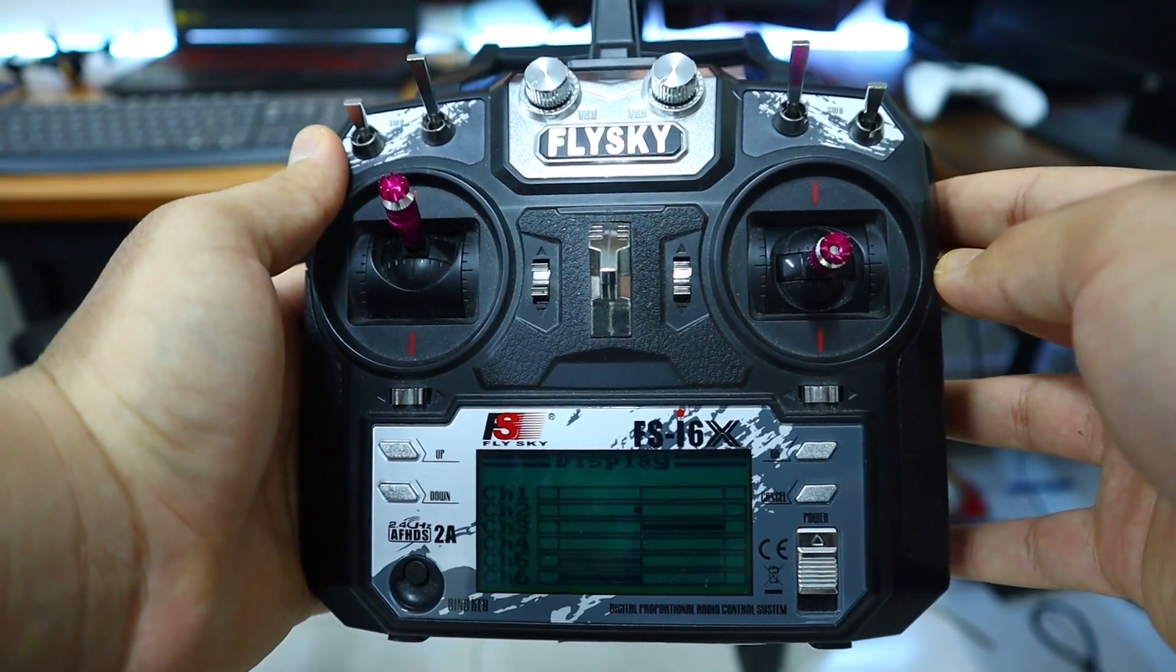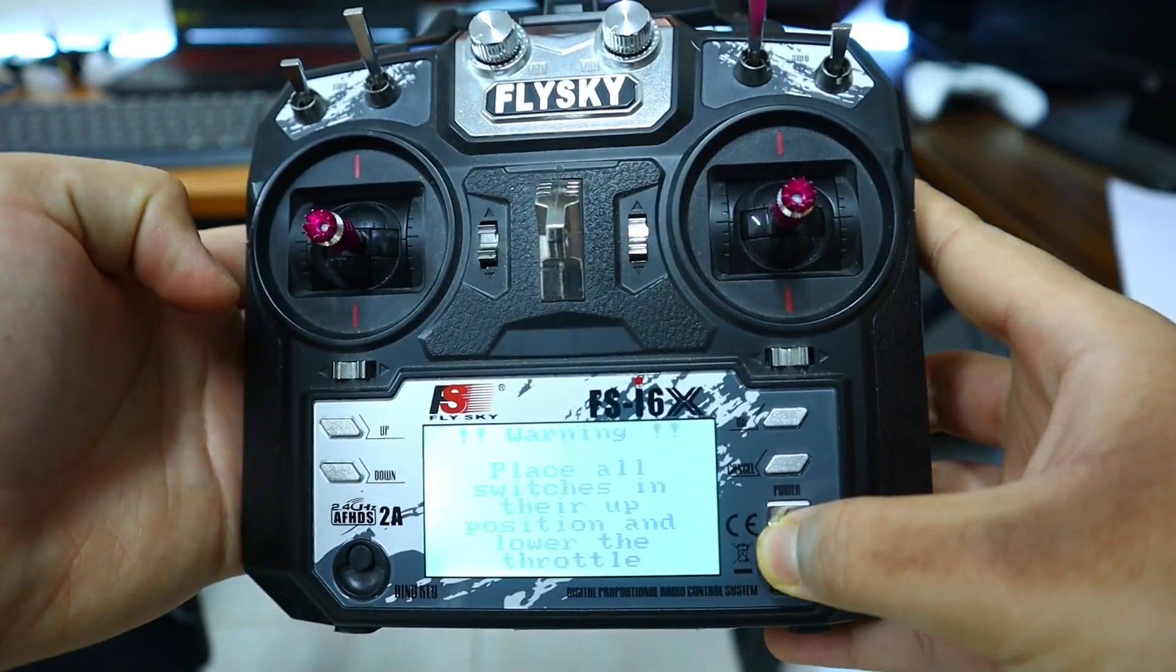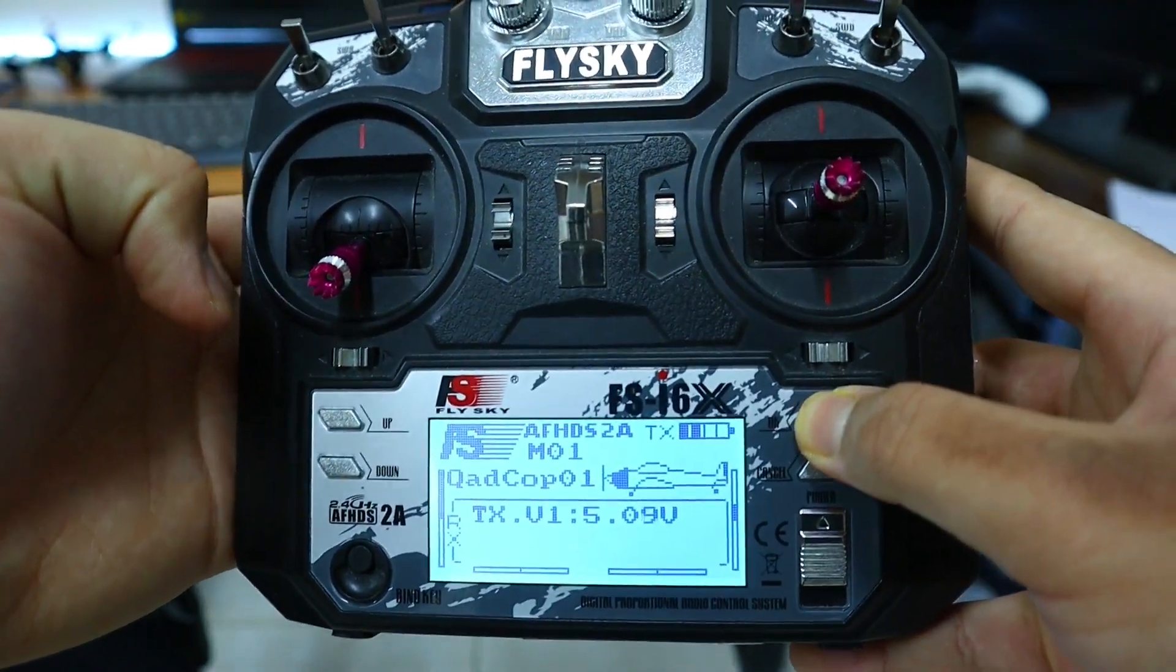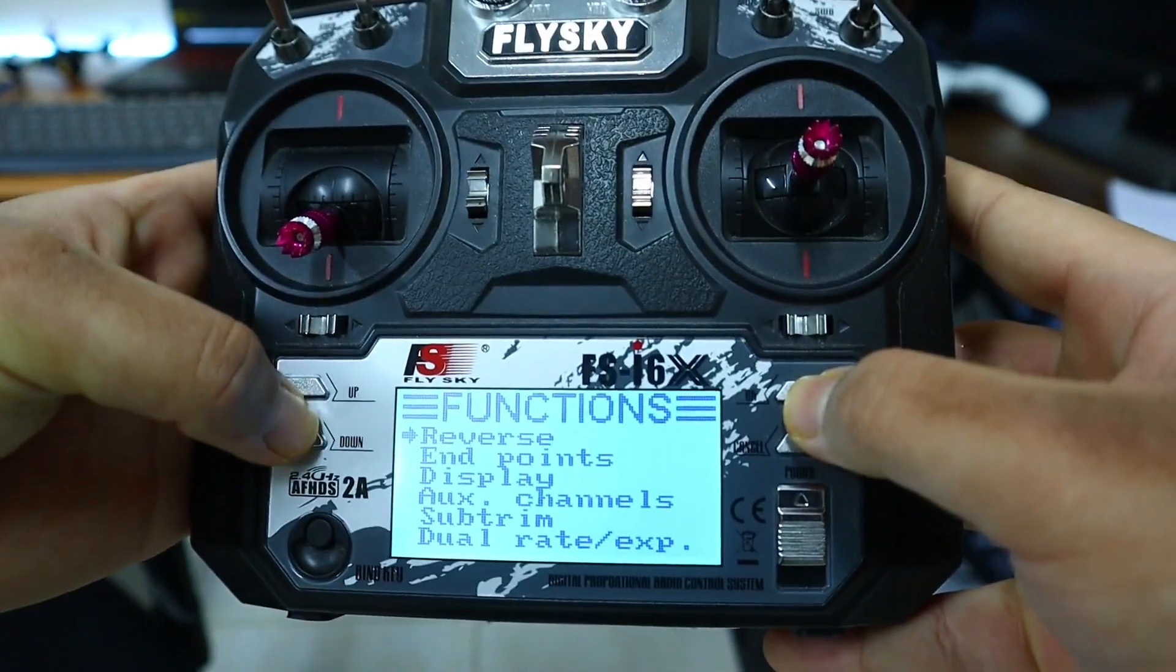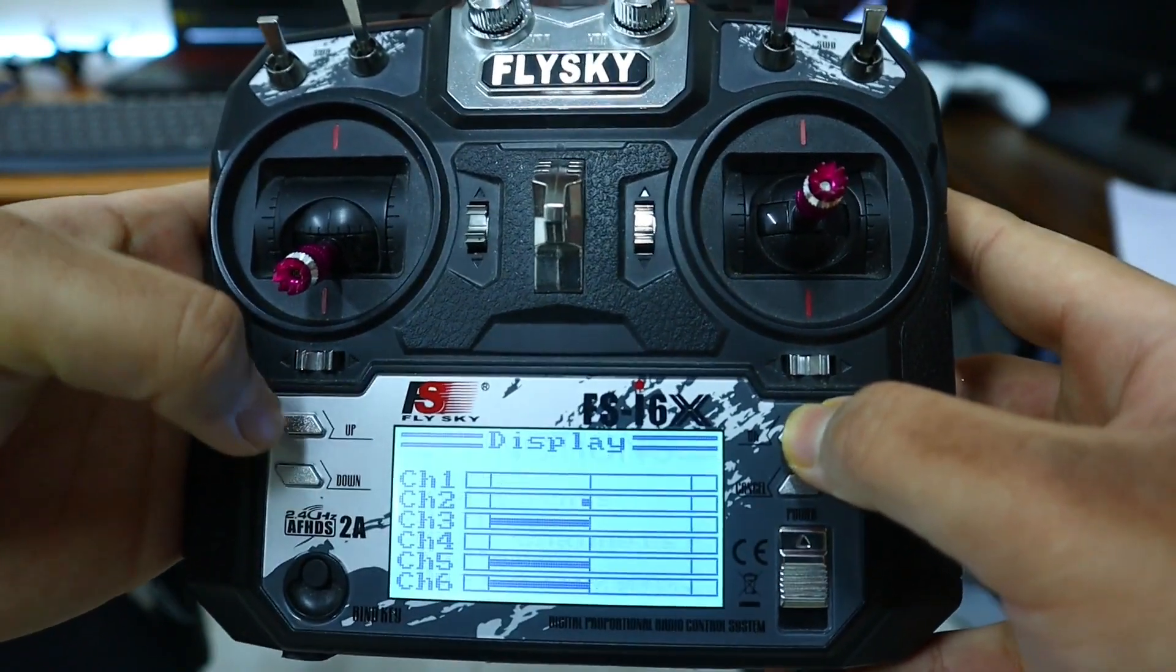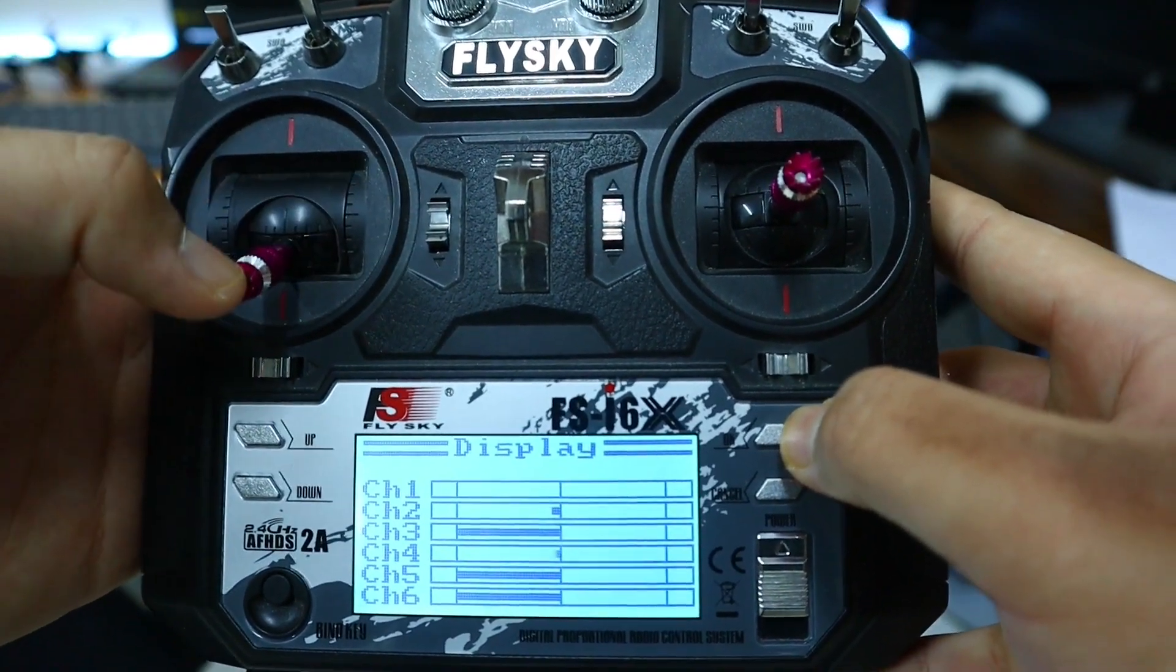Okay, if you know what drone parameters are but don't know on which channel they are, you just switch on your controller, hold OK, go to setup and then display. And as you can see my throttle is on channel number 3.